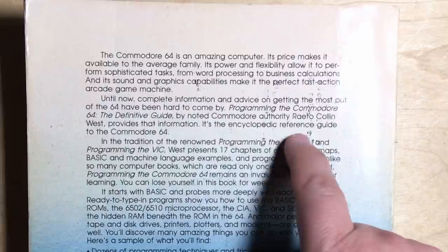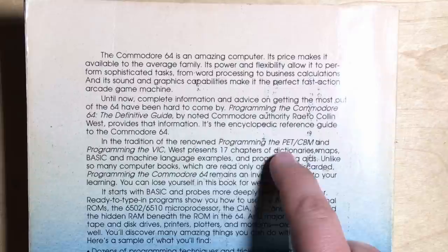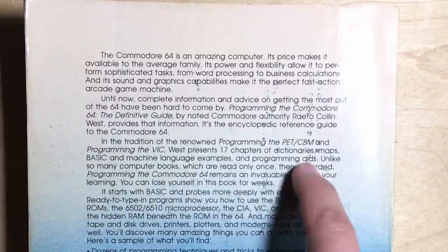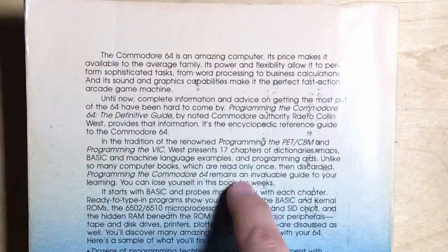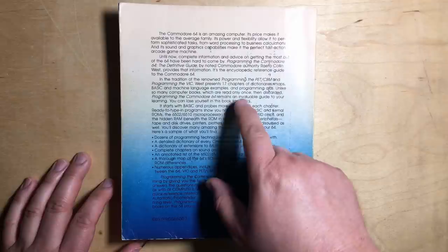It's the encyclopedic reference guide to the Commodore 64. In the tradition of the renowned Programming the PET/CBM and Programming the VIC, West presents 17 chapters of dictionaries, maps, basic and machine language examples, and programming aids. Unlike so many books which are read only once then discarded, Programming the Commodore 64 remains an invaluable guide to your learning. You can lose yourself in this book for weeks. And this is totally true.